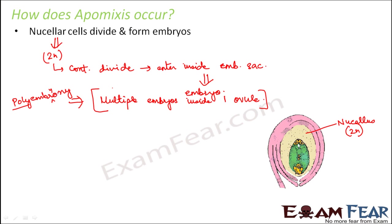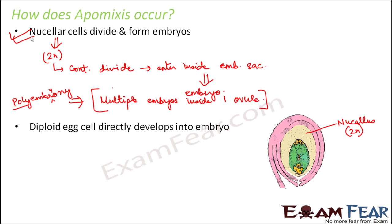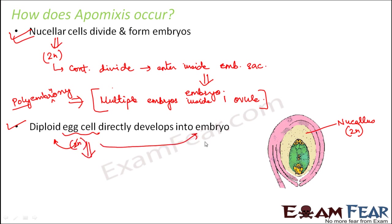This is one way apomixis occurs — no fertilization, yet embryos are formed. The next way is if a diploid egg cell directly develops into an embryo. Normally the egg cell is haploid because it is formed by meiosis, which is a reduction division. But if the egg cell is not formed by reduction division, then the egg cell will be diploid.